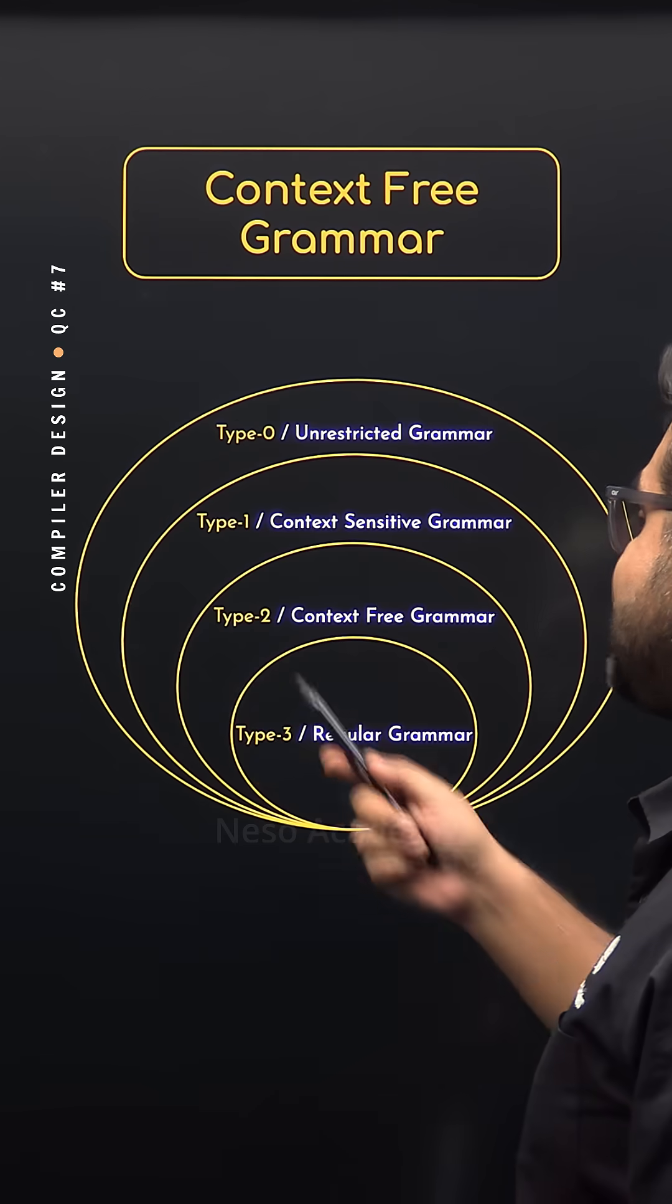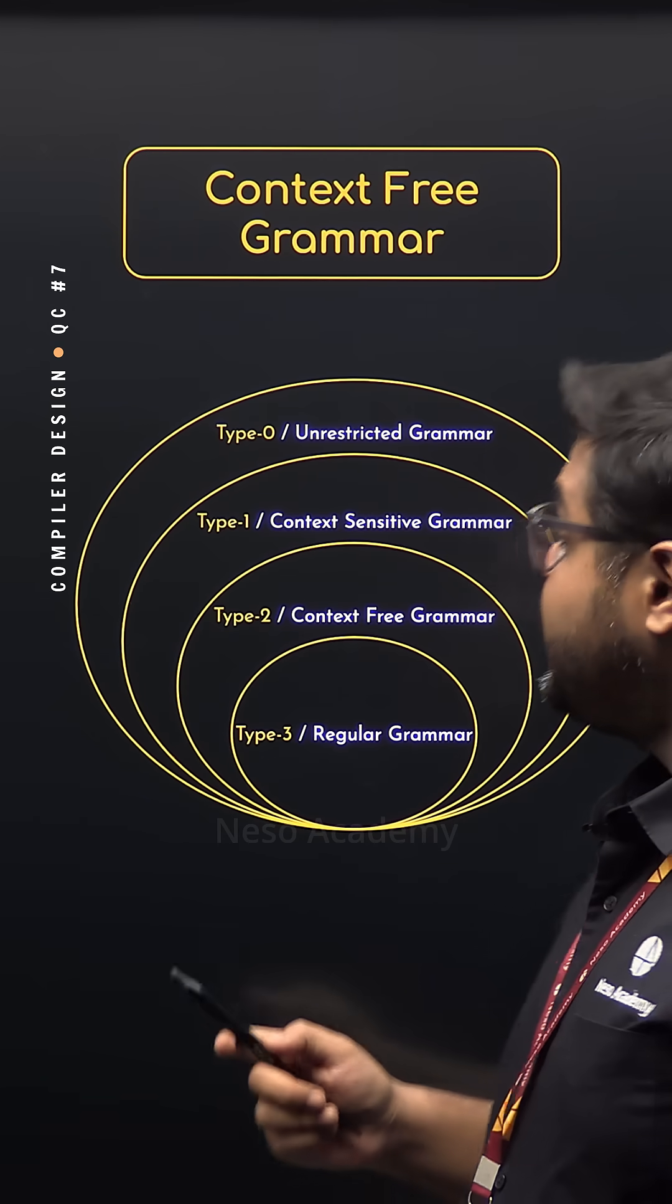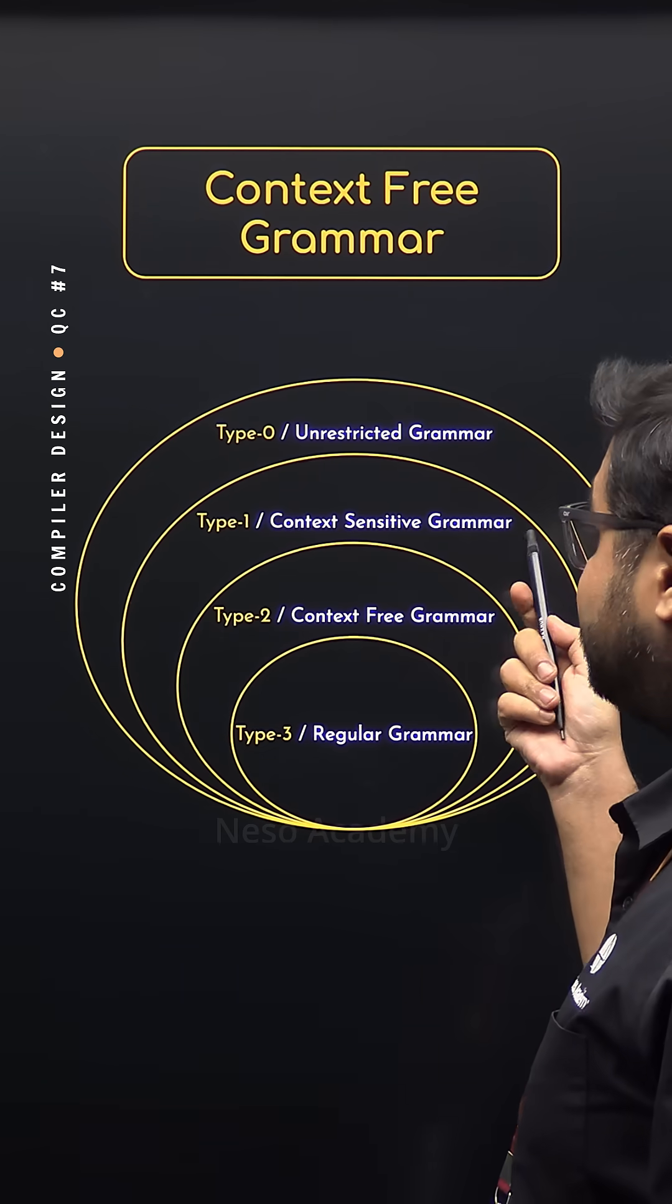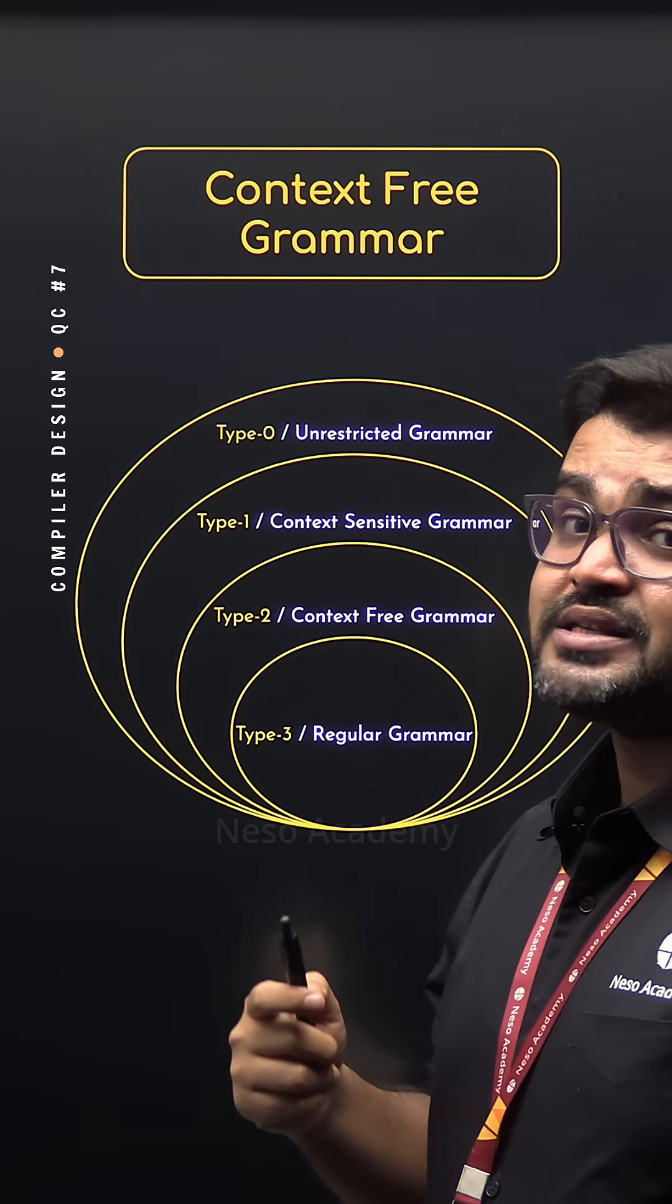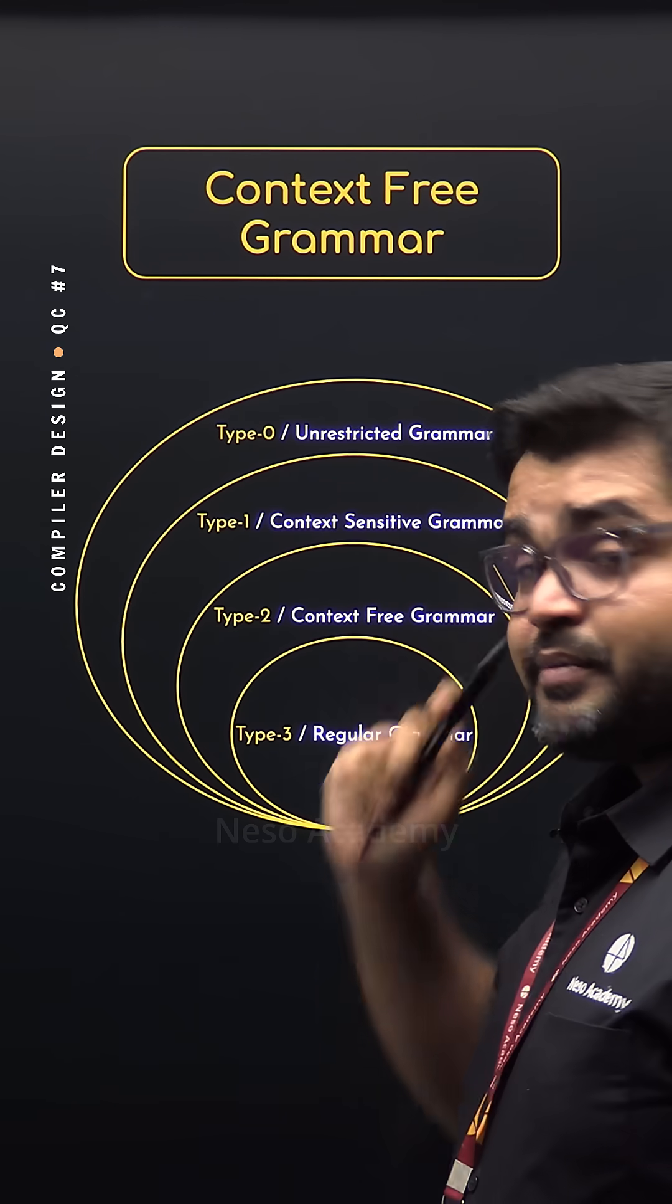First of all, Type 2 or context-free grammar is a subset of Type 1 or context-sensitive grammar, which is a subset of unrestricted or Type 0 grammars.